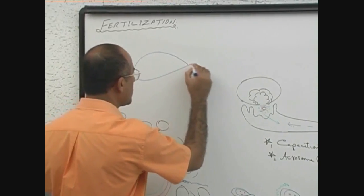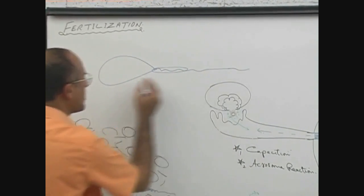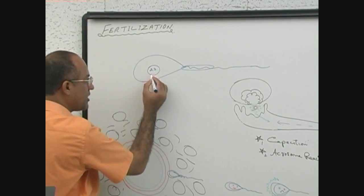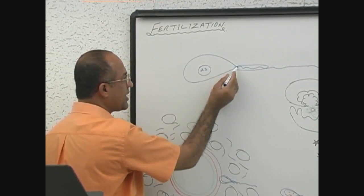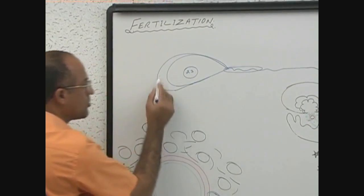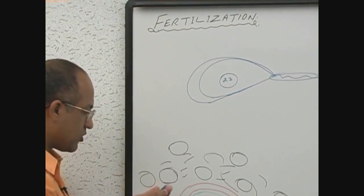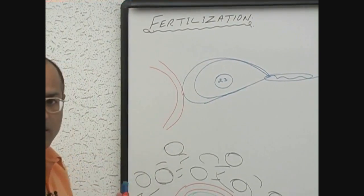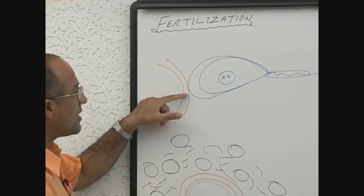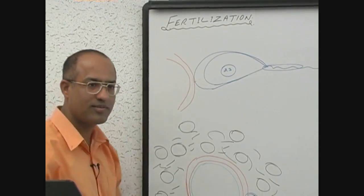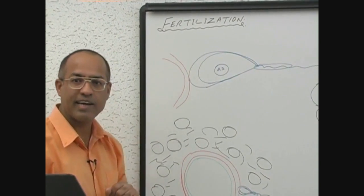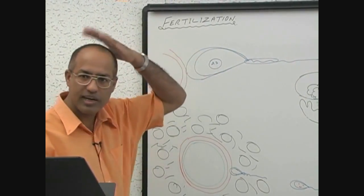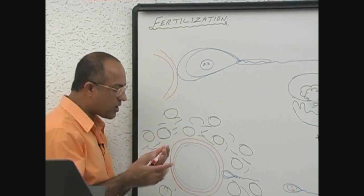This is a sperm with middle piece and tail. This is the membrane of the sperm. This is its nucleus which has 23 chromosomes, haploid number 1N, and this is the acrosomal. Now as soon as sperm touches the zona pellucida, zona pellucida induces a reaction called acrosome reaction.